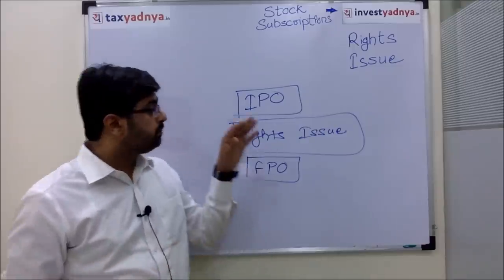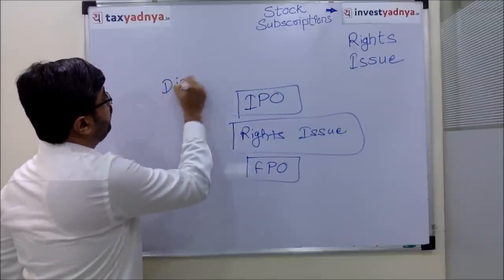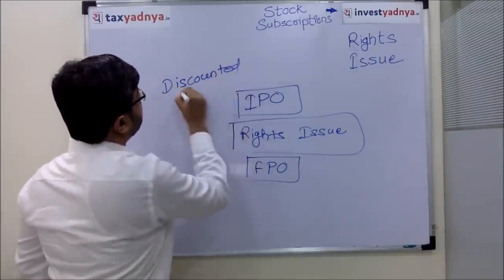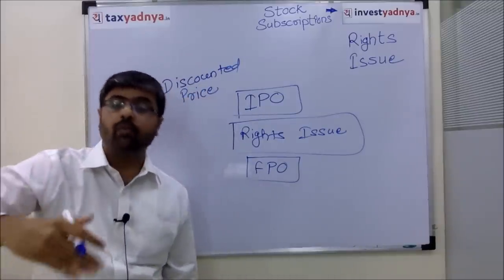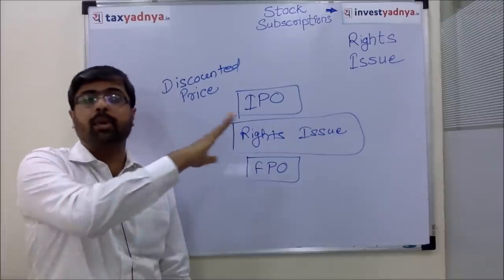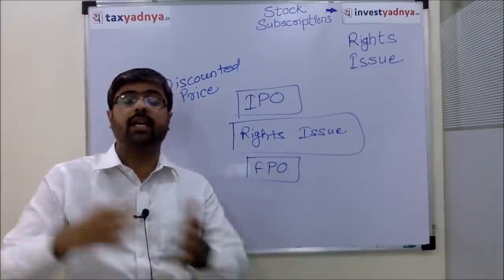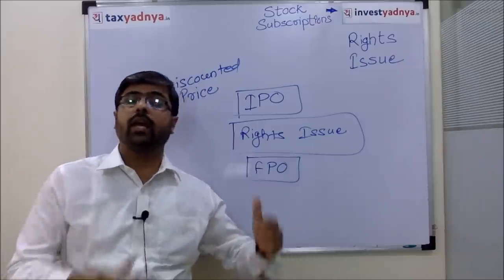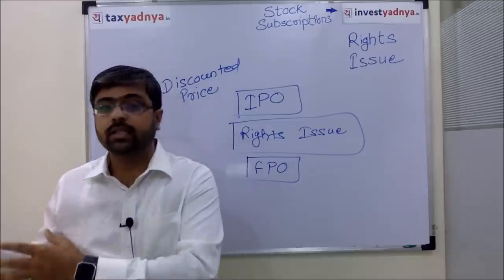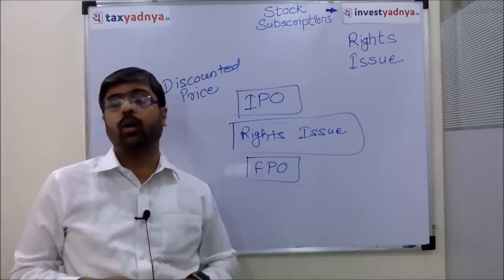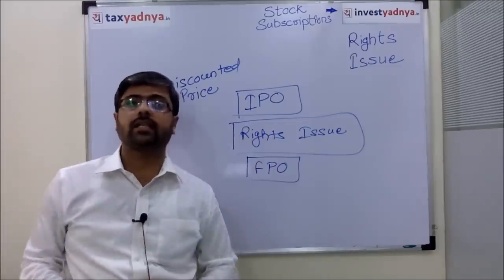Generally, the rights issue is offered at a discounted price. Discounted price means that the shares are offered to existing shareholders at a discount compared to the current market price. For example, the rights issue is open from 3rd May to 17th May, at a discounted price. If the share is currently at Rs.350, then they have offered existing shareholders a price of almost Rs.220. After that, they raised a structured rights issue.